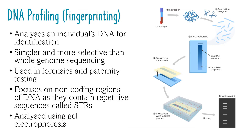Developed in the 1980s, DNA profiling, or DNA fingerprinting, analyzes an individual's DNA and is used for identification by comparing small, specifically selected DNA segments. It's simpler and more selective than whole-genome sequencing and is used in forensics and identifying family relationships.